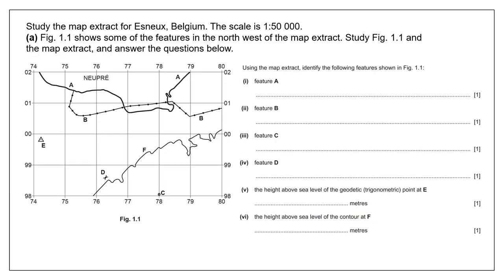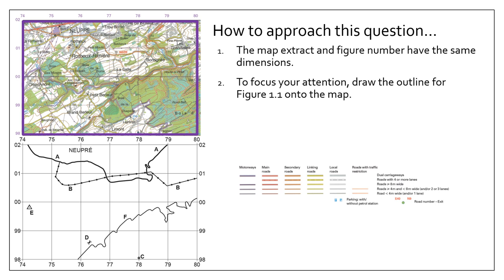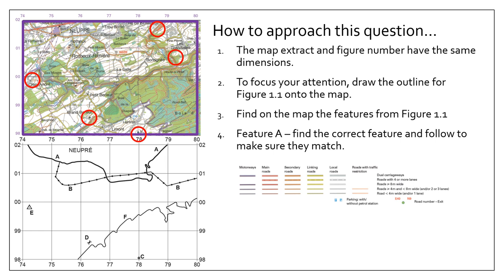Typically the first question will look something like this. The key thing to remember is that the map extract and the figure have the same dimensions — the grid squares are exactly the same size, 2 centimeters by 2 centimeters. To focus your attention, draw the outline for figure 1.1 onto the map, then find on the map the features from figure 1.1. You've got features A, B, C, D, the height of E, and the contour line F. For feature A, find the correct symbol and follow the line to make sure they match.